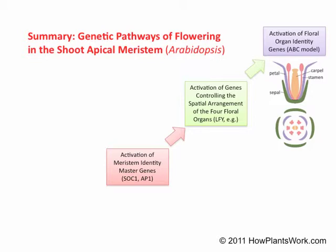The first step in flowering is flower initiation in the shoot apical meristem, which is the result of the activation of so-called meristem identity master genes. The activation of these genes converts the vegetative meristem into a flowering meristem — that is, the shoot apical meristem goes from making new shoots and leaves into making a flower.